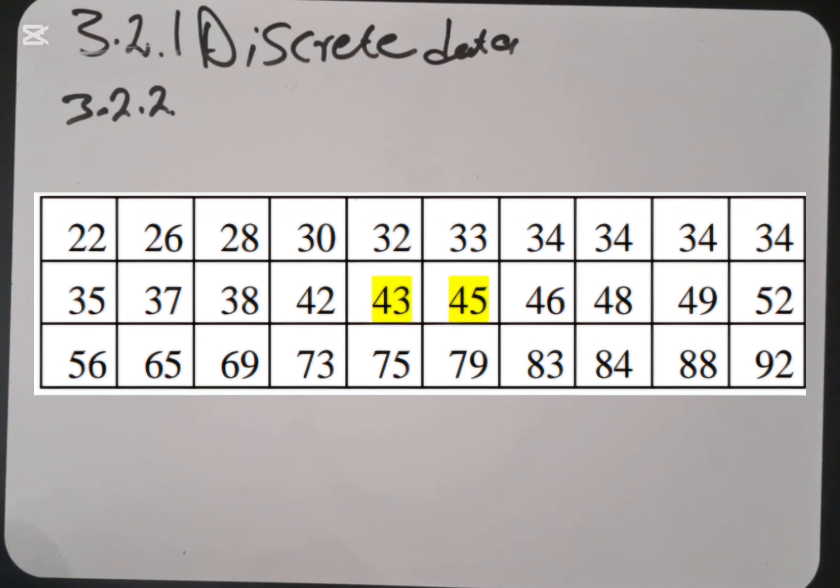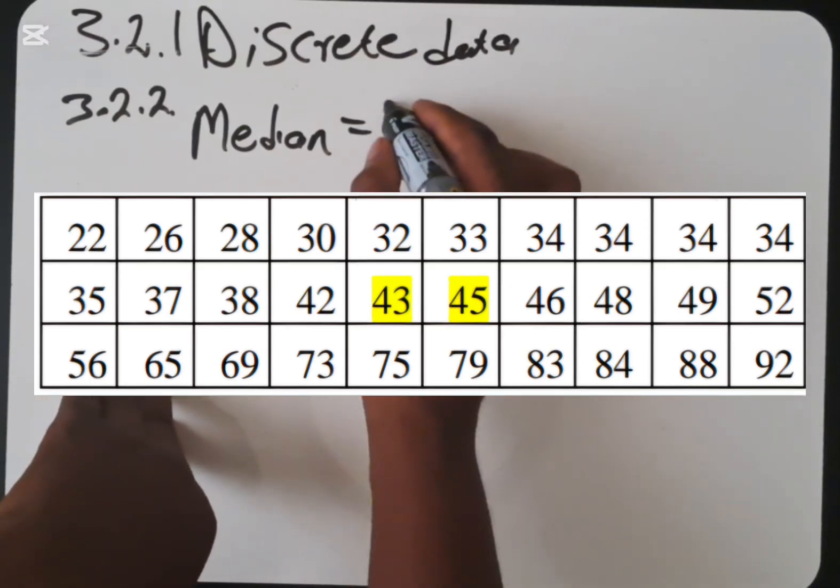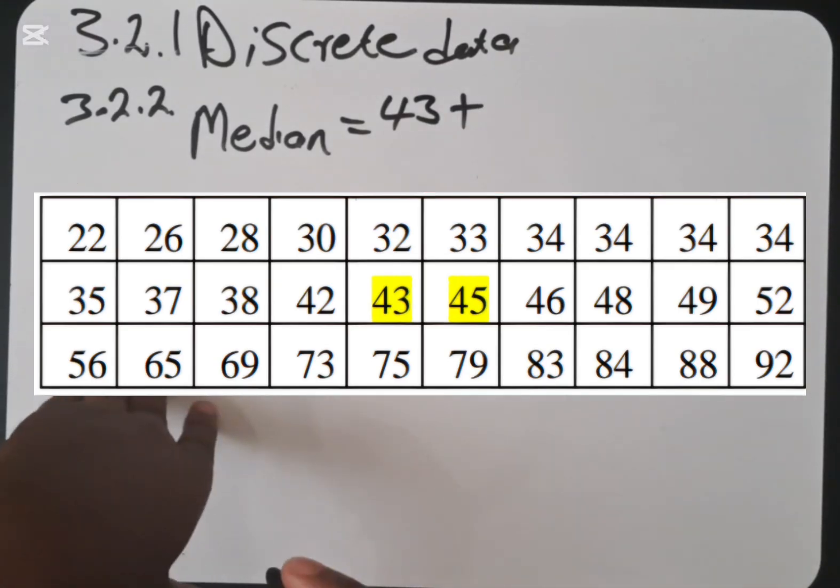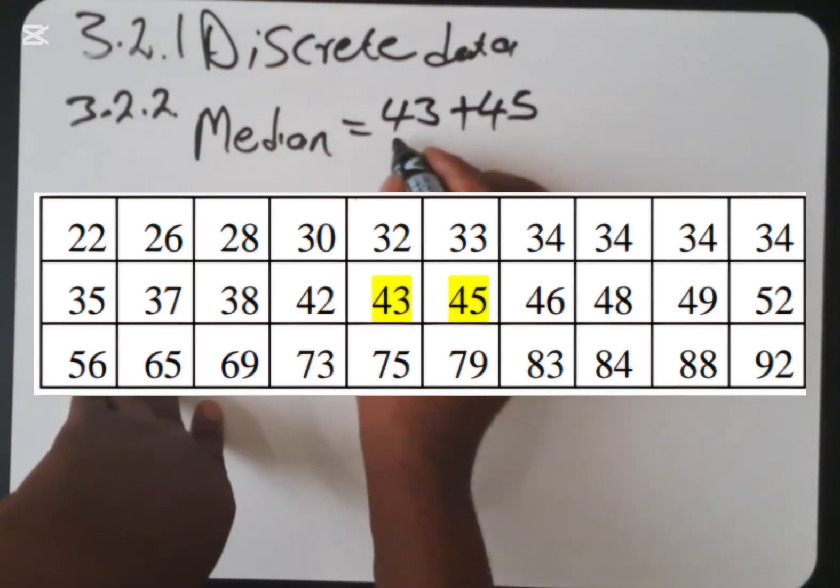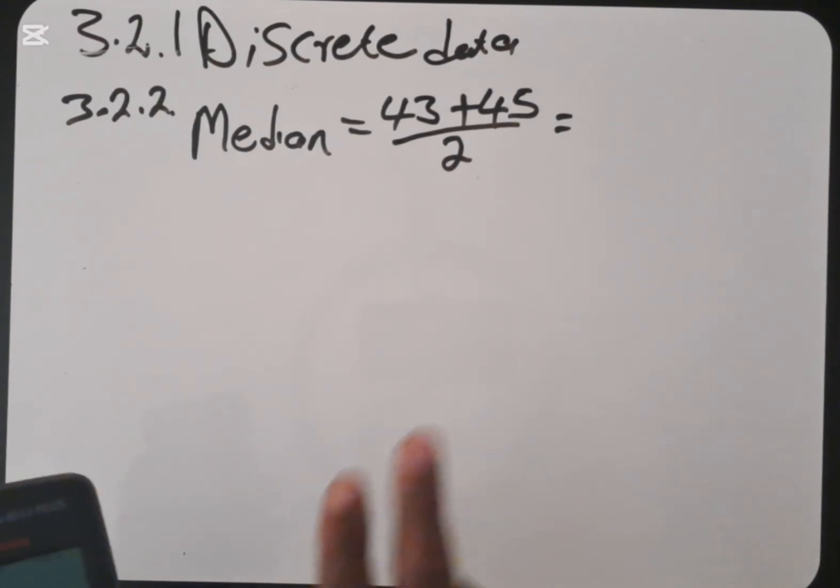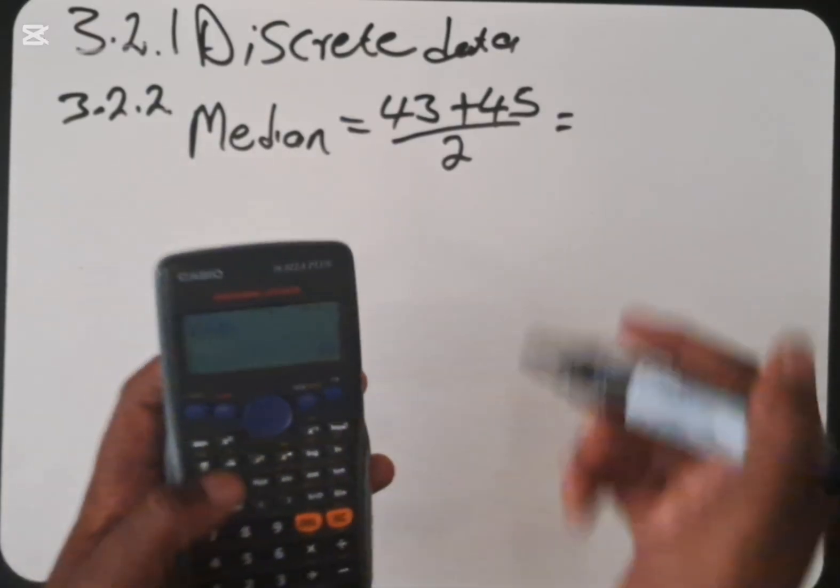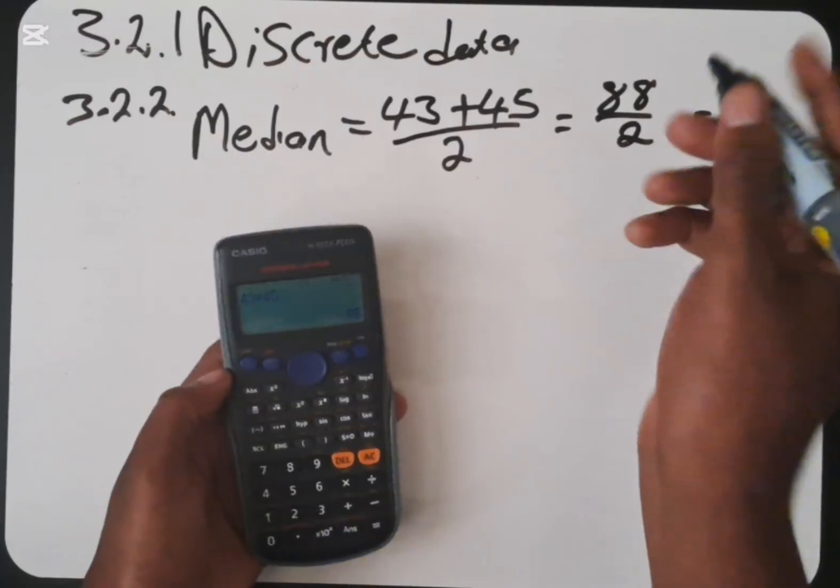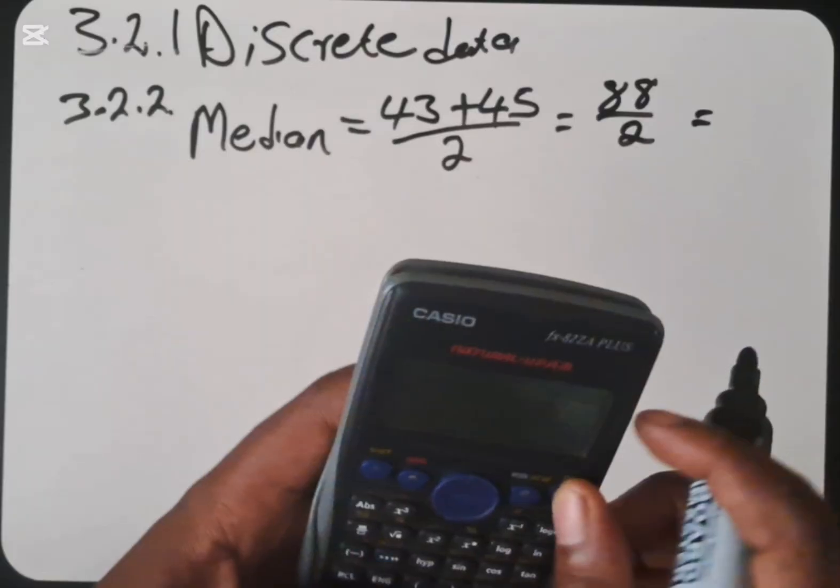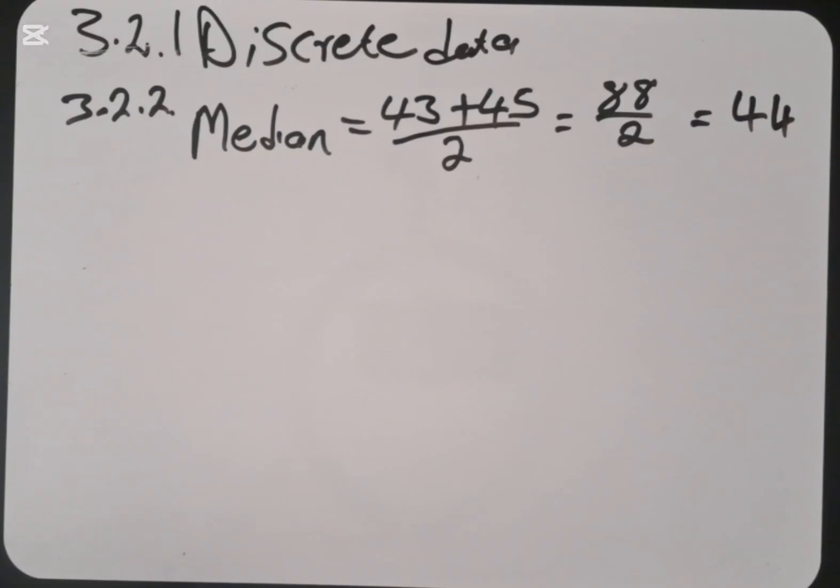Let's count and check where is position 15. Counting from 1 to 16, in this case, our median is going to be in position 15, which is 43, and position 16, which is 45. Because we are adding two numbers, we divide it by 2. What we know is that our median is between 43 and 45. So we are now going to say 43 plus 45, which is 88, divided by 2, which equals 44. Our median is 44.